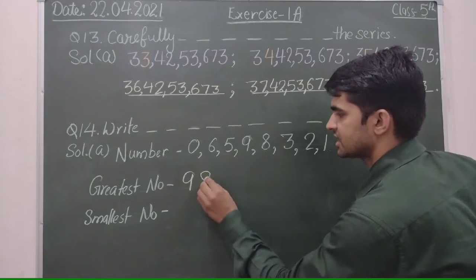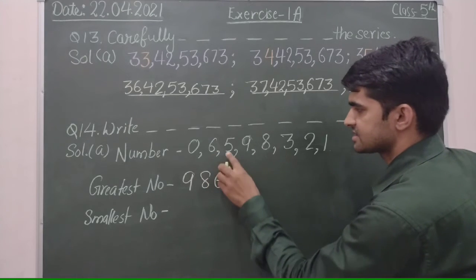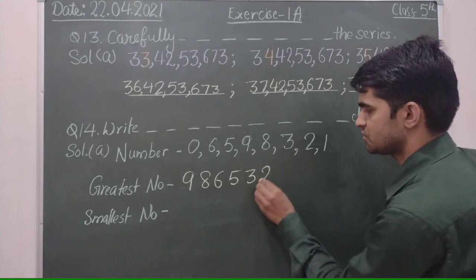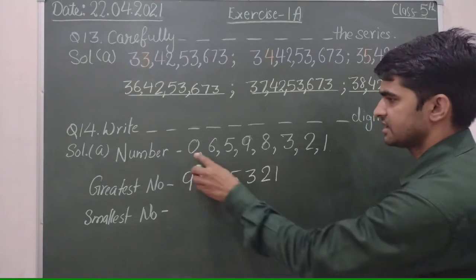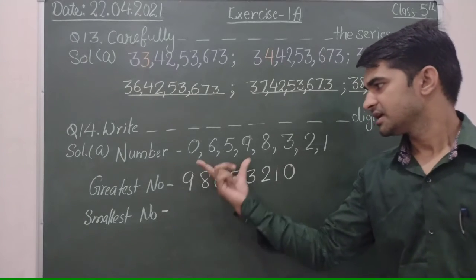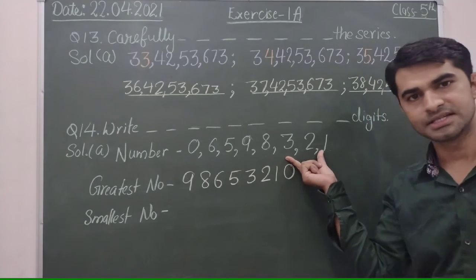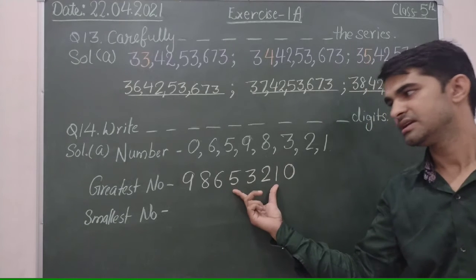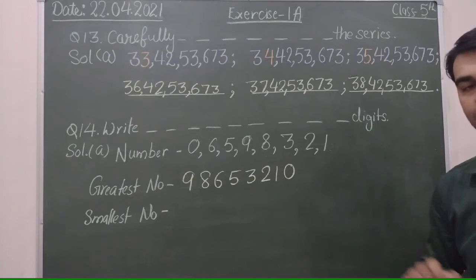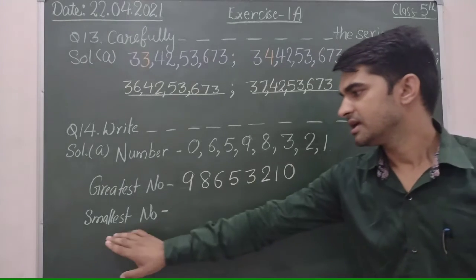Then 6, then 5, then 3, then 3, then 2, and 1, and at last 0. If these are eight digits, so it must be eight digits: 1, 2, 3, 4, 5, 6, 7, 8. Now in case of smallest number.